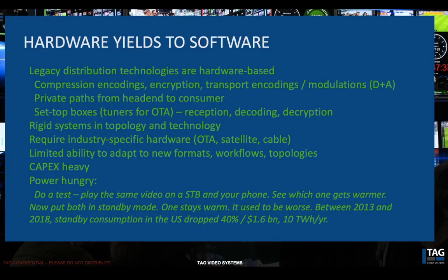We're looking at an era where hardware is yielding to software. Our legacy distribution technologies are hardware-based — very bespoke. The compression encodings, encryption, transport encodings and modulations are all hardware-based things, built on private paths from the head end to the consumer. They typically require set-top boxes or tuners for reception, decoding, and decryption. From a topological point of view, these are very rigid systems. OTA, satellite, and cable require different kinds of conveyance hardware specific to those domains. They have very limited ability to adapt to new formats, new workflows, new topologies, and they're CAPEX heavy — you've got to buy specialized gear.